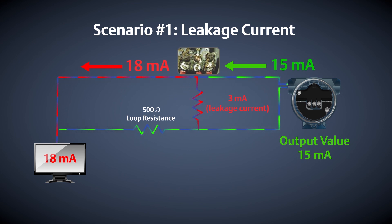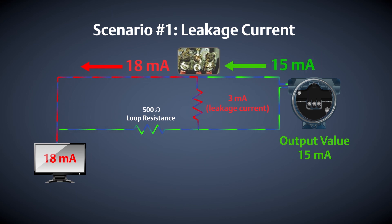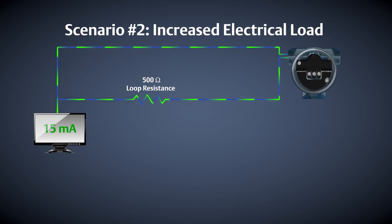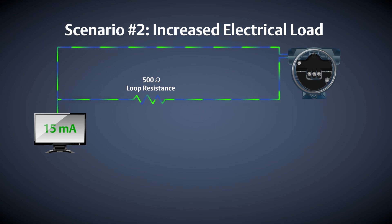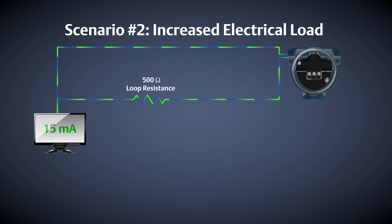In this example, the control room is reading 18 milliamps, even though the transmitter is outputting 15 milliamps.